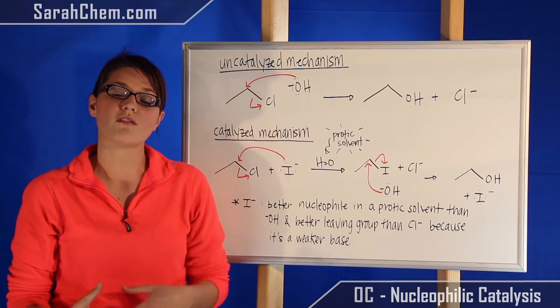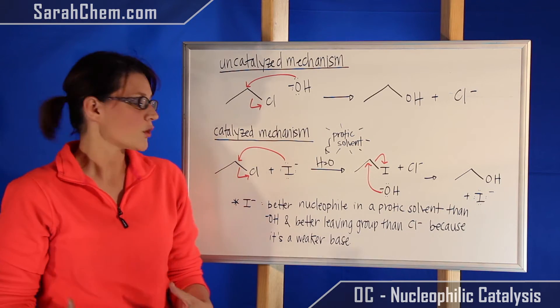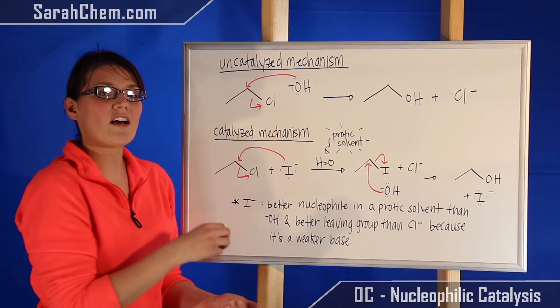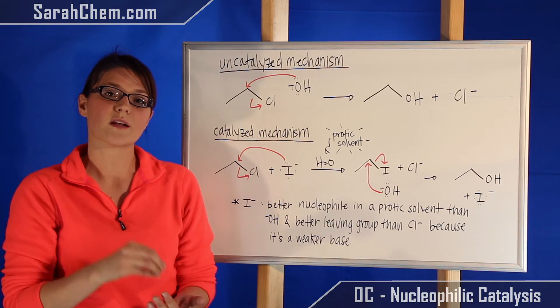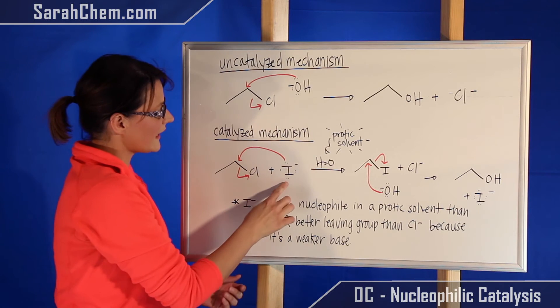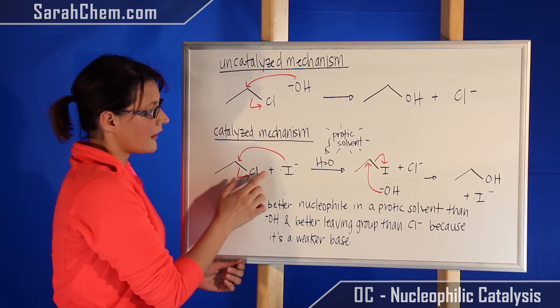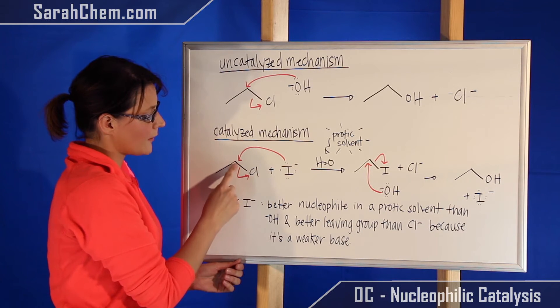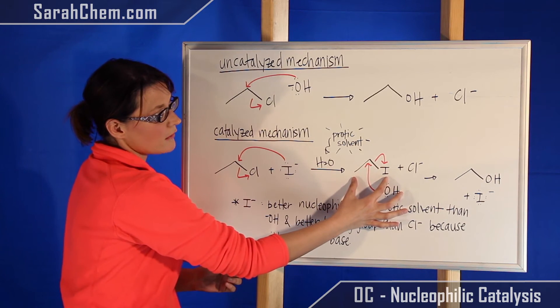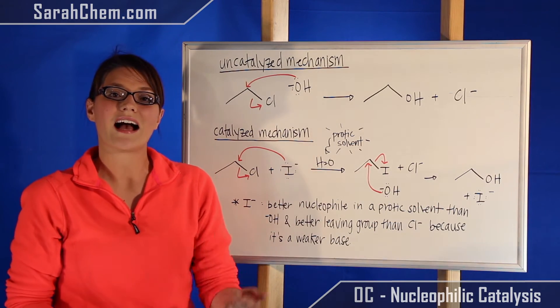Remember when you're in a protic solvent, a large weak base makes a really good nucleophile. So what happens then is we now have a better nucleophile. So our iodide will be a stronger nucleophile than the hydroxide will. That means that in this case iodide will come in SN2 attack this alkyl chloride. Iodide comes, attacks our carbon and the chloride gets kicked off. So here we have our alkyl iodide and the chloride.